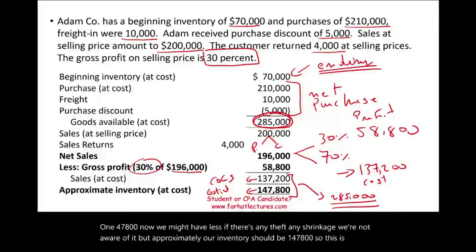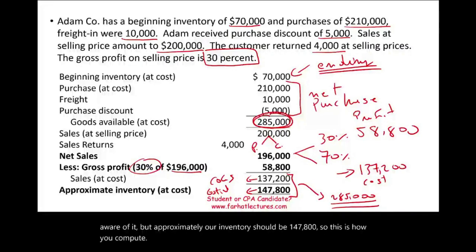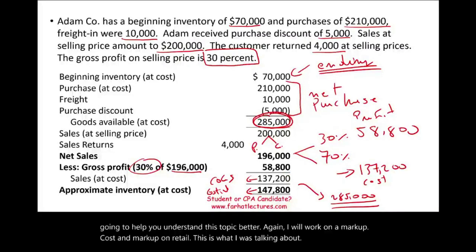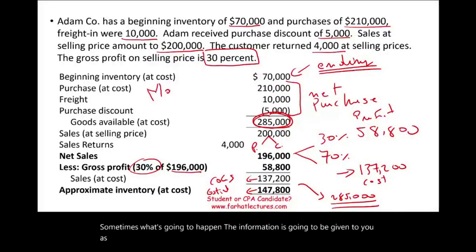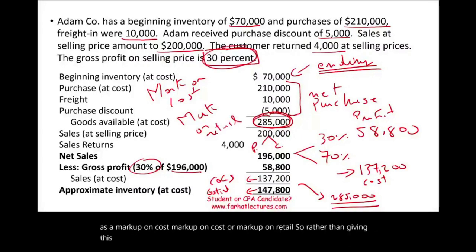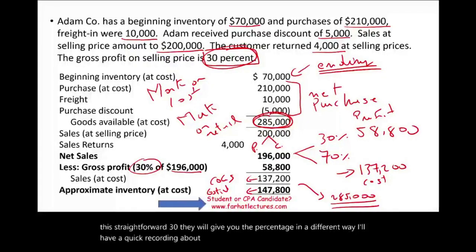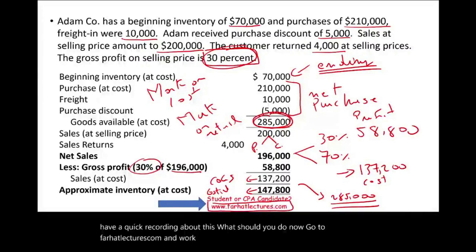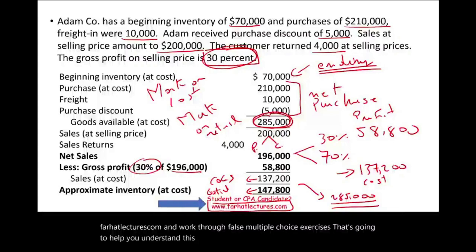This is how you compute ending inventory using the gross profit method. Sometimes the information is given as markup on cost or markup on retail, rather than a straightforward percentage like 30%. Go to farhatlectures.com and work through multiple choice and true-false exercises to help you understand this concept. Invest in yourself. Good luck, study hard, and stay safe.